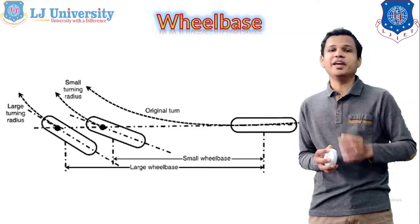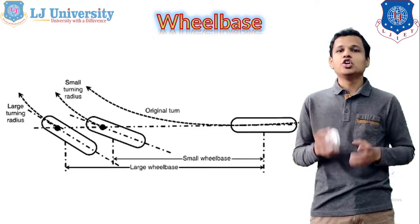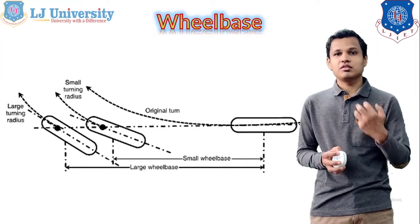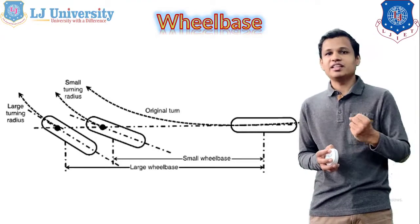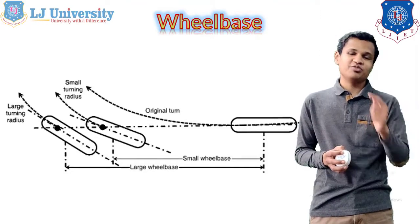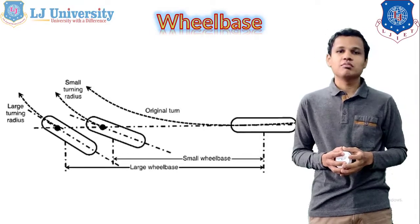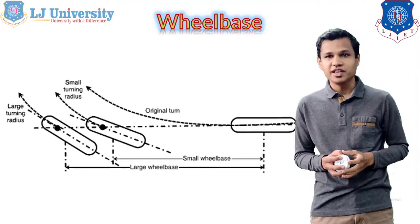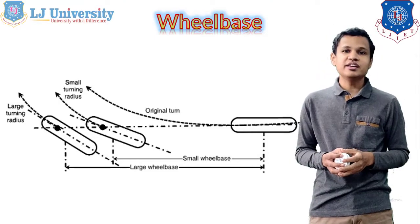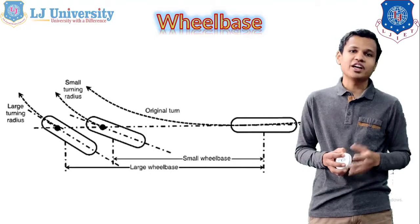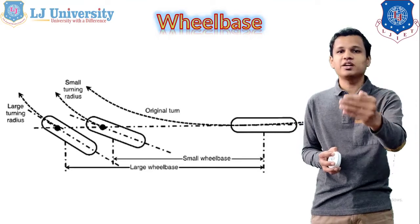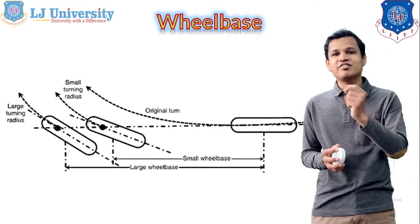The third factor is wheelbase — simply the distance between the two tire centers in the case of two wheelers. If the wheelbase is smaller, the turning radius will be smaller. If the wheelbase is larger, the turning radius will be more. The advantage of a larger wheelbase is that stability will be better. Also, the load transfer will be smaller compared to a smaller wheelbase, because there is more distance between the rear and front tire.